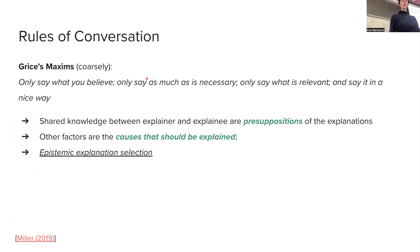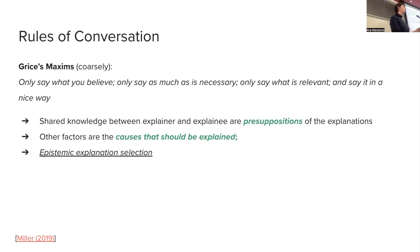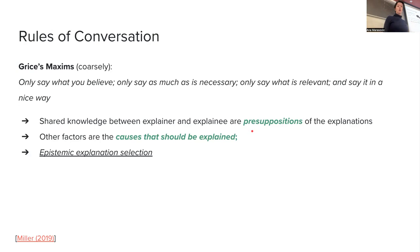To summarize these four rules: only say what you believe, only say as much as is necessary, only say what is relevant, and say it in a nice way. Miller says that when we are having these conversations with a goal to explain something, what is important is to know that there is shared knowledge between the explainer and explainee. When I'm explaining to you, I have a history of all our prior lectures in mind, so I know that's shared among us and I don't need to go into details about what an AI model is.